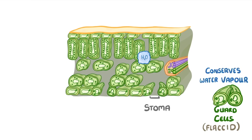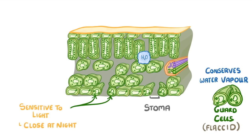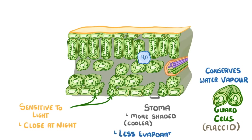Another adaptation is that the guard cells are sensitive to light, so they close at night time when photosynthesis isn't taking place and they don't need carbon dioxide. And the reason that most of the stomata are on the underside of the leaves, rather than the top, is that the lower surface is more shaded, which makes it cooler, and so it means that less water will evaporate.